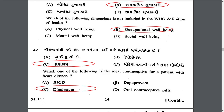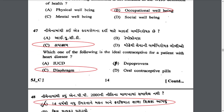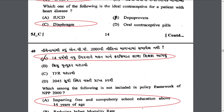Which is the ideal contraceptive for a patient with heart disease? The answer is C — diaphragm.